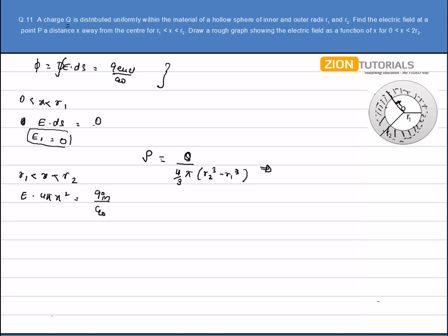Now clearly I have a volume charge density, so I can calculate the charge enclosed in this much surface. That is the volume charge density into volume of this much part, that will be equal to 4/3 π(x³ - R1³). So I have Q in now.